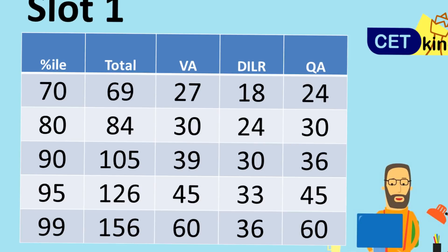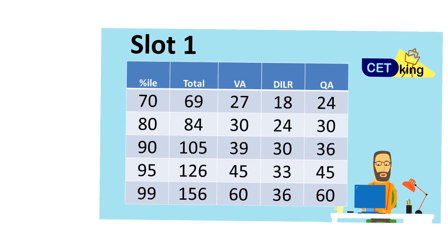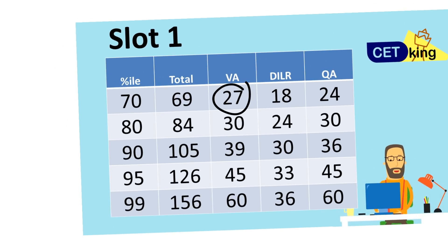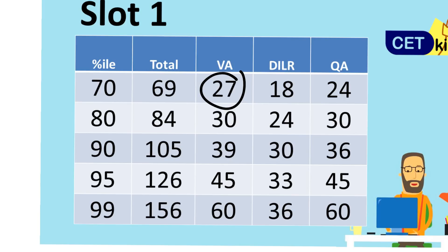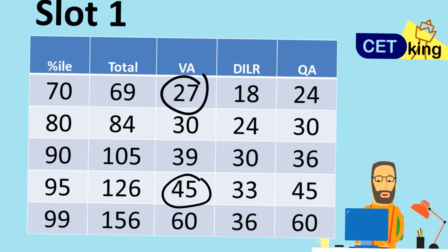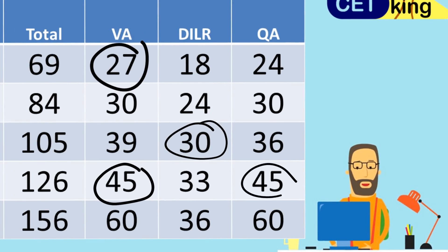Now let's talk about score-based percentile. If you've calculated your scores — say 45, 45, 30 — we'll use those. For verbal: if your score is 45, you're expecting around 95 percentile. For DI: if your score is 30, you're expecting 90 percentile. That gives you approximately 95–90 percentile across sections, and you can use that to apply to colleges.